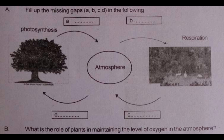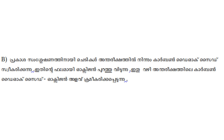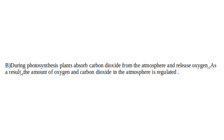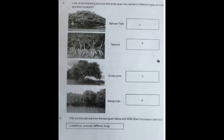What is the role of oxygen in the atmosphere? During photosynthesis, plants take carbon dioxide from the atmosphere and release oxygen. Look at the following pictures and write down the names of different types of roots and their function.